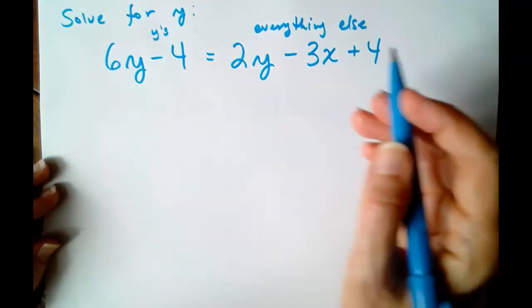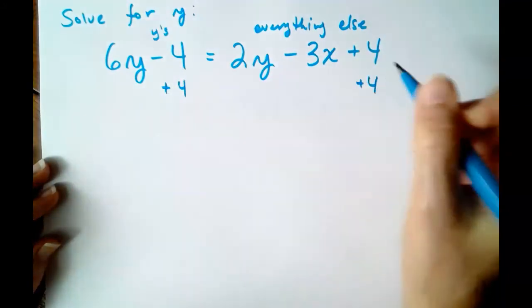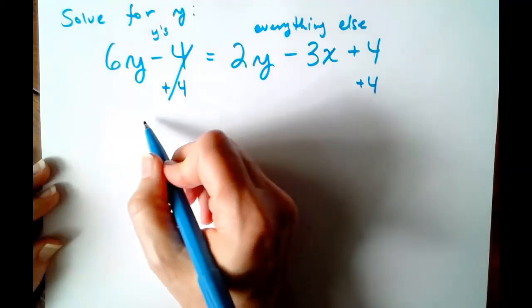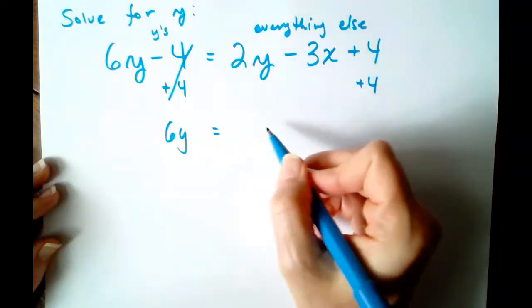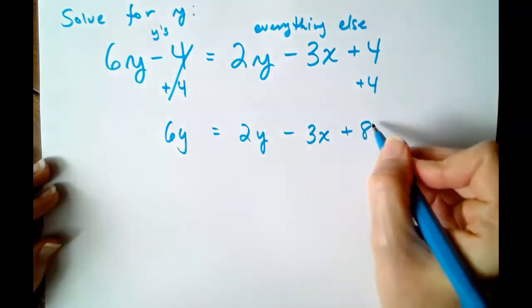So first things first, let's get rid of this 4. Plus 4, plus 4. So it cancels there. Now we can see, combined like terms, 6Y equals 2Y minus 3X plus 8.